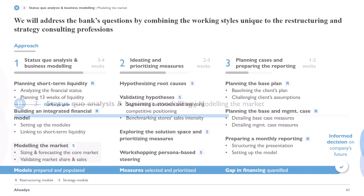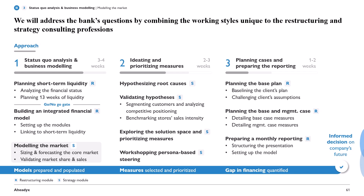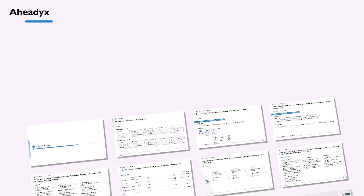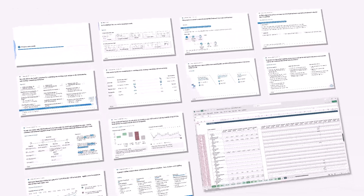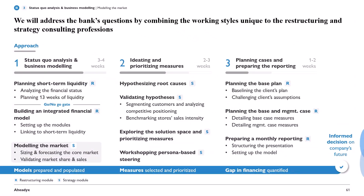If you want to learn how to model the market for a commercial due diligence or corporate restructuring project, you've come to the right place. The goal of this third work package in phase one is to validate the sales numbers that our client, Old-Fashioned — a fashion retailer from Germany — gave to us. To do that, we will size and forecast the core market, then validate Old-Fashioned's market share and sales numbers going forward.